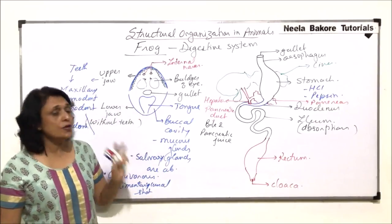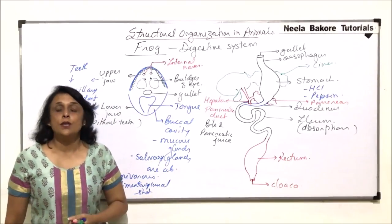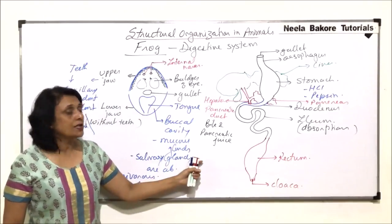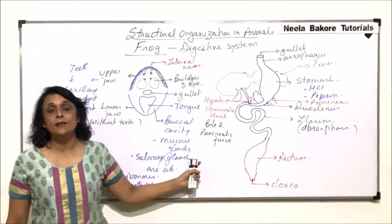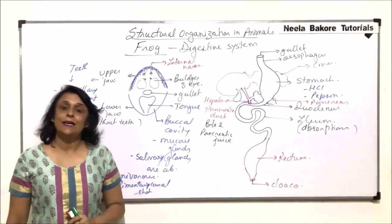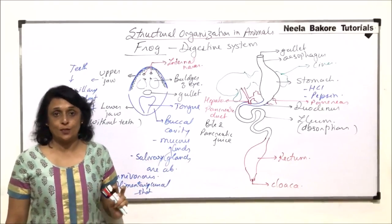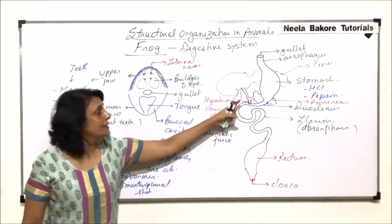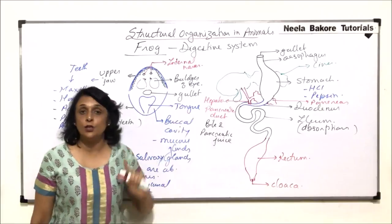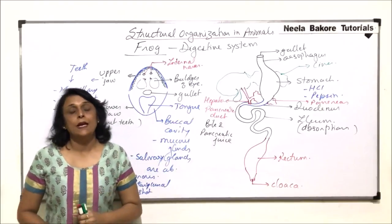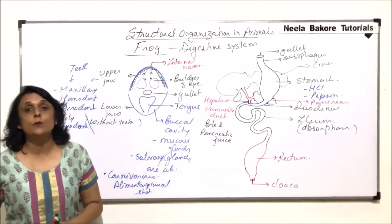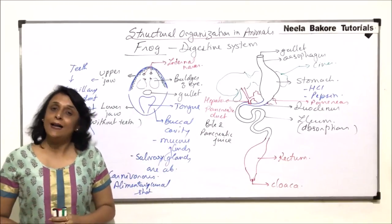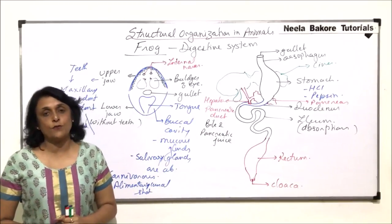This is how the digestive system works in frogs — digestion takes place in the stomach and duodenum. In the next part, we will take up another system of the frog.